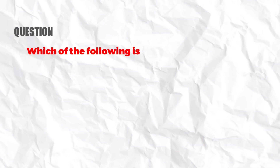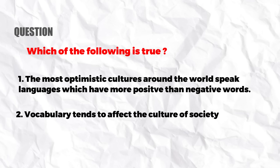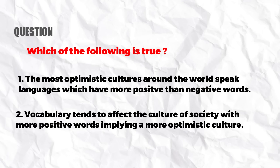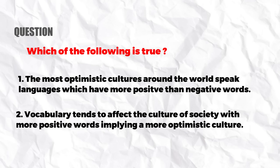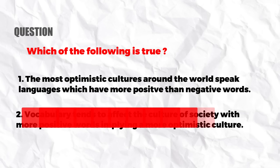Another question asked: which of the following is true? Option one: 'The most optimistic cultures around the world speak languages which have more positive than negative words.' Option two: 'Vocabulary tends to affect the culture of society, with more positive words implying a more optimistic culture.' Both options are kind of correct — more positive words correlate with more optimistic culture. However, there can be a correlation without a cause-and-effect relationship. The second option clearly states that vocabulary tends to create this effect, which was never mentioned in the passage. That makes it an incorrect linkage — the second option was incorrect.